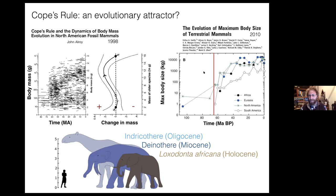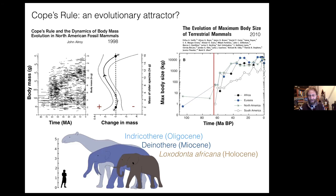More recent work — a 2010 paper by Felisa Smith et al. — looked at maximum body size of different groups (carnivores and herbivores, across different continents) and saw the same pattern: after the asteroid impact at around 66 million years before present, there is this space-filling dynamic of mammalian groups. Here is a modern African elephant alongside two of the largest mammalian species that have lived on land: Dinotherium from the Miocene, and Indricotherium. That's pretty big — not sauropod size, but pretty big.